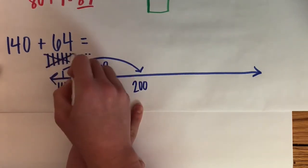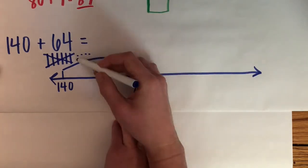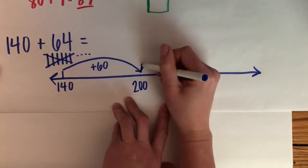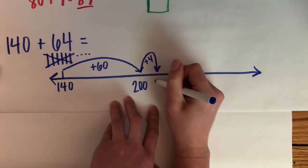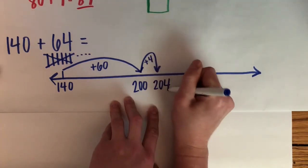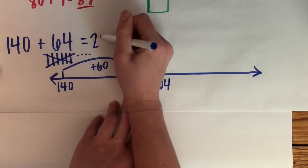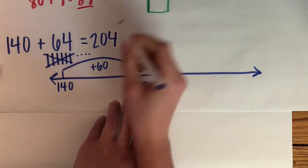So I used all my tens. Now I have 4 ones to add. So I'm going to make a tiny hop of 4. And I know that 200 + 4 = 204. So my answer to this equation would be 204.